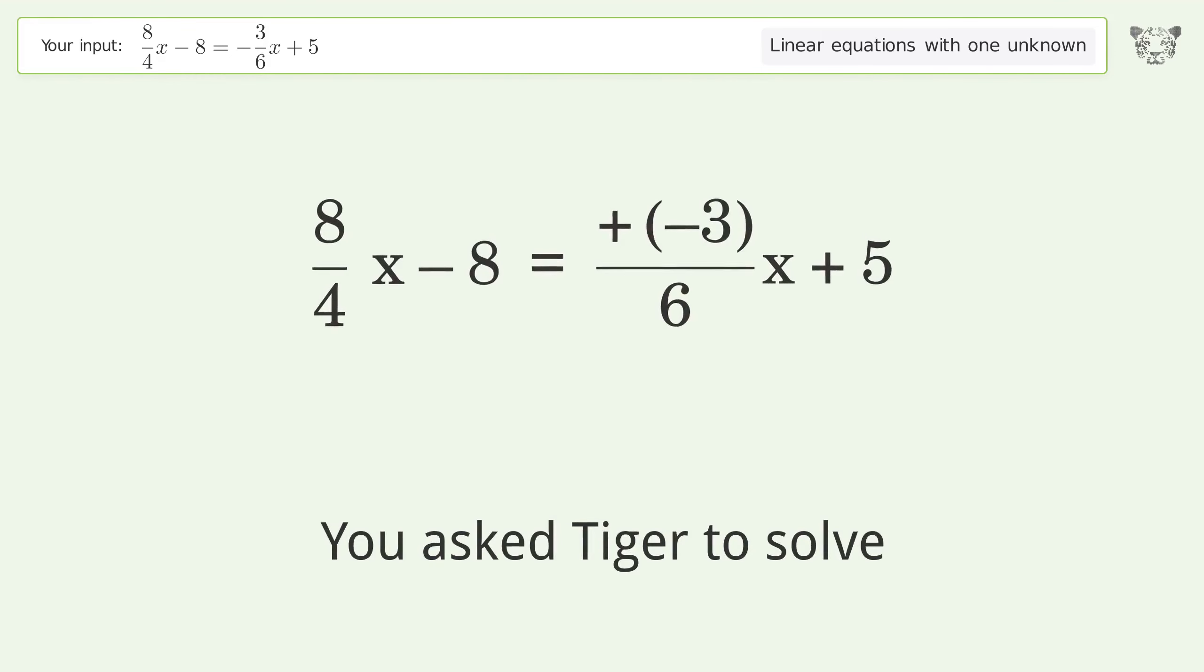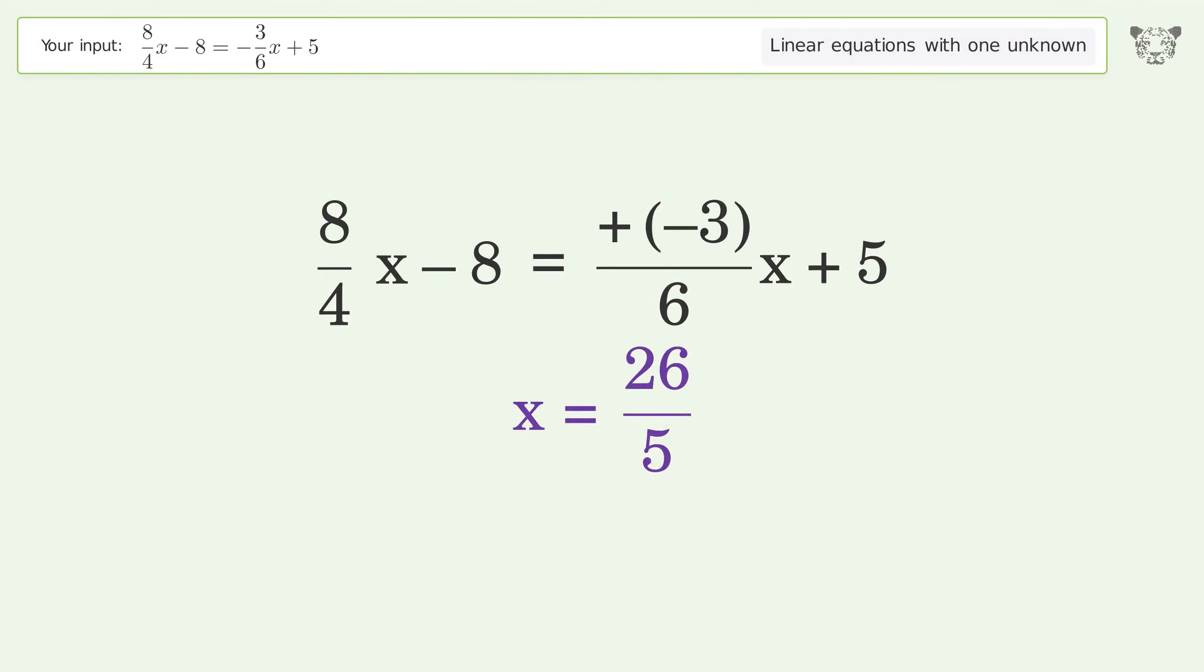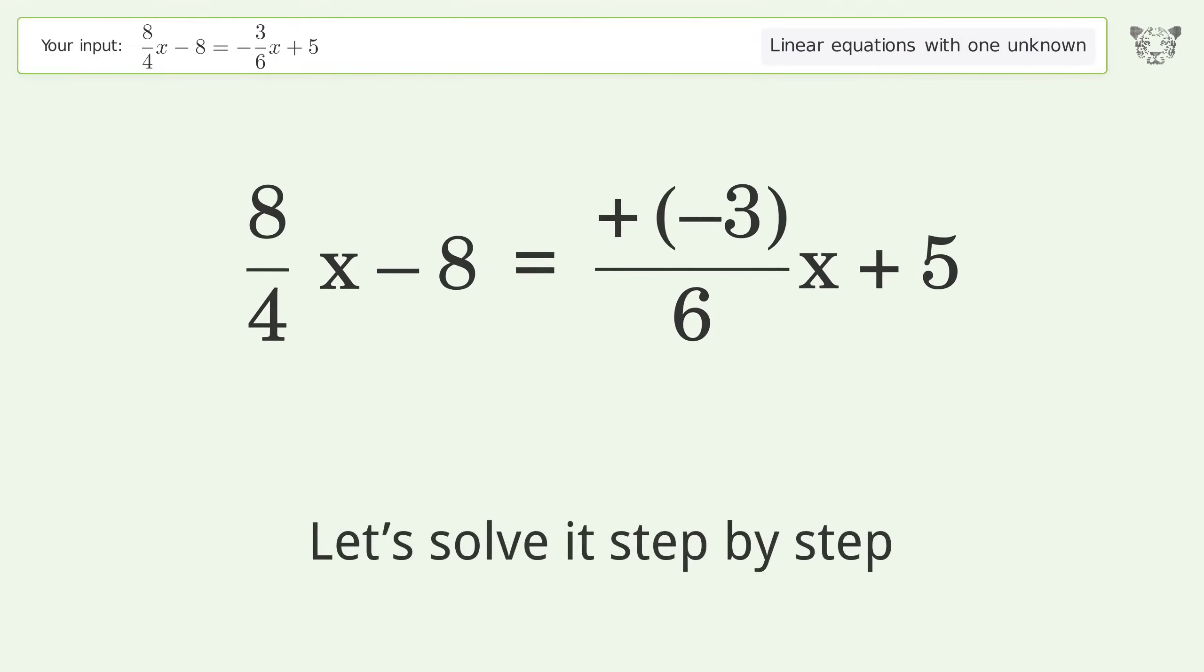You asked Tiger to solve this. This deals with linear equations with one unknown. The final result is x equals 26 over 5. Let's solve it step by step.